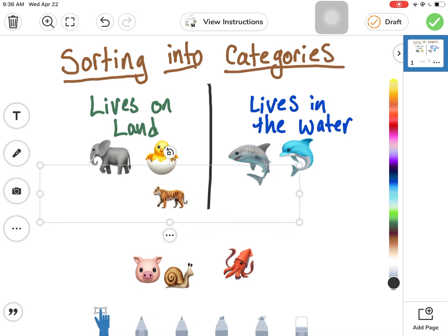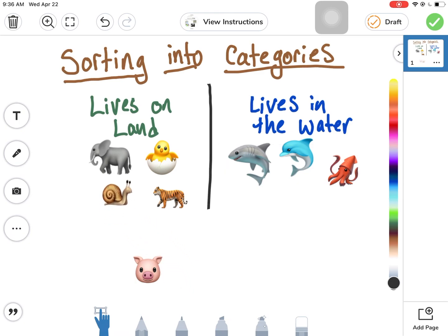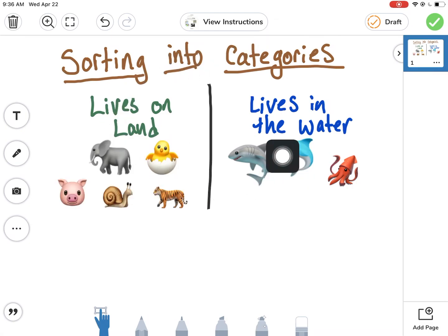We've got our tiger - definitely lives on land. We've got our squid - lives in the water. Our snail lives on land. And now we have sorted the different animals into categories.